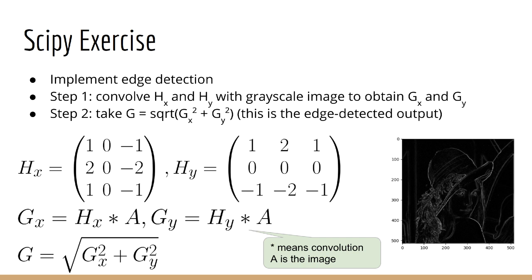So first, I'm going to define two filters HX and HY. These are called the Sobel filters. They're both 3x3 matrices. Next, you're going to do convolution using both of these filters on a grayscale image. Let's call the output GX and GY.